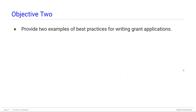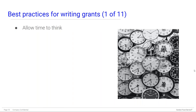Moving to objective two — best practices for writing grant applications. First, allow time to think. For me this meant keeping notepads in several places — by the sink, by the bed, and by my recliner — because this is where I often had ideas for revisions, additions, or deletions. For example, when washing my face, brushing my teeth, or trying to relax watching television, I could quickly write a note to remind myself about a change for the next time I was at my computer.